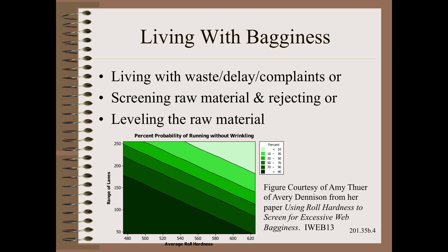There is no pleasant solution for bagginess. Your choices are to live with the waste, or screen the bad rolls and reject them, or fix the raw material. Fixing the root cause means fixing the raw material — specifically, leveling its gauge or thickness profile. The practical challenge here is that the supplier might need to make the material more consistently level than they have ever made it. Sometimes they may need to make it more level than anyone has ever made it.